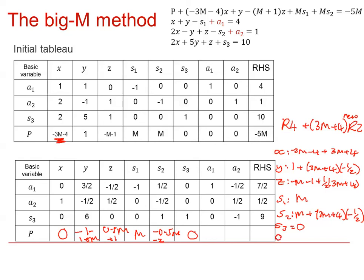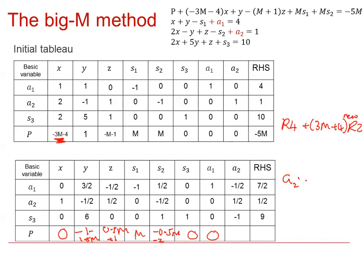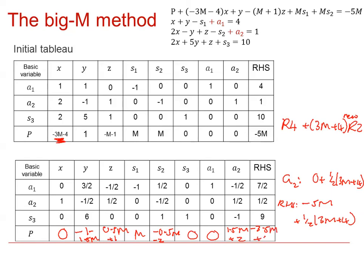For a1: we get 0. For a2: 0 plus one half of (3m plus 4) gives 1.5m plus 2. Finally, the right-hand side element: minus 5m plus one half of (3m plus 4) works out to be negative 3.5m plus 2.